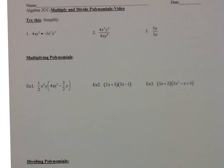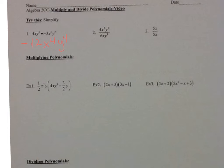So we have 4 times negative 3 is negative 12. x to the first times x to the third is x to the fourth. And y to the second times y to the second is y to the fourth. For dividing, remember you're going to divide the coefficients. If you have the same base, you subtract the exponents.